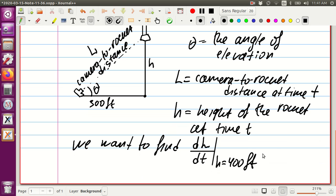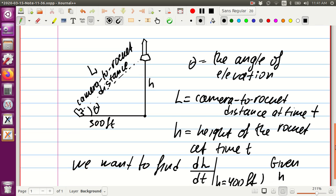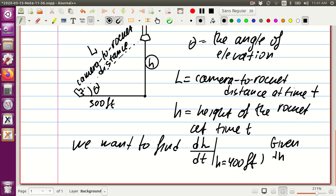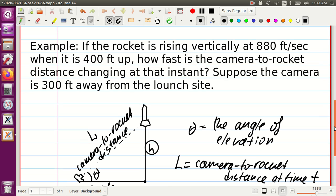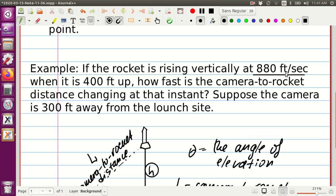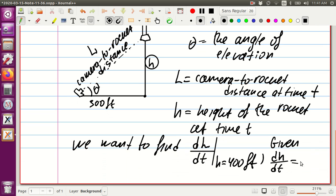And what is given in this problem? We are given how fast the rocket is going up. So when the rocket is going up, the h is changing with respect to time. Every time the rocket moves up, the height is changing. So we are given how fast the height is changing, and that's exactly how fast the rocket is moving up. The rocket is moving up at 880 feet per second, so dh/dt is 880 feet per second.